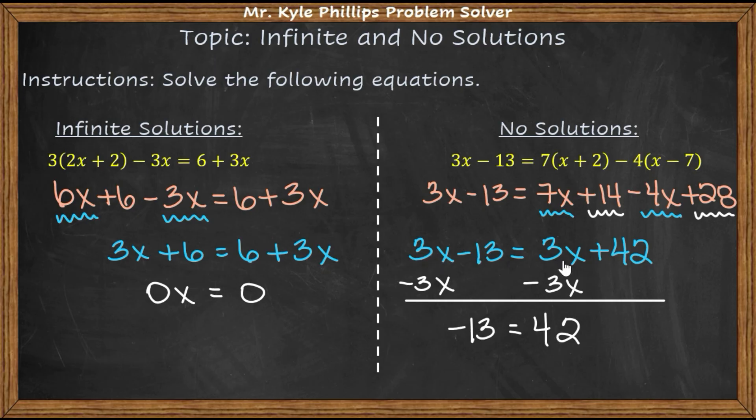3x minus 13, 3x plus 42. The coefficient in front of the x is the same, but the number here is different on both sides. That means that it does not matter what number you plug in. You cannot plug in a number to make these balanced. So here we would say this has no solution. And you may see some teachers notate it like this. A zero with a line through it. This means no solution.